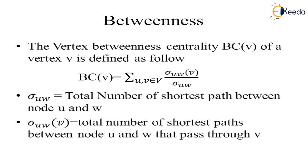Through which between two points we have to find if there exists a path. Sigma_uw is the shortest path between node u and w. And sigma_uw(v) is the total number of shortest paths between node u and w that pass through v.